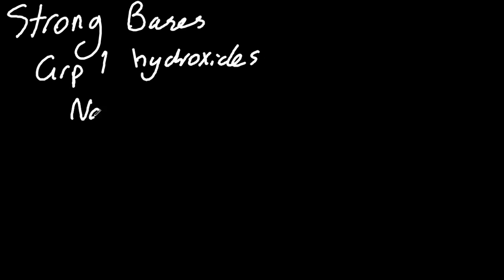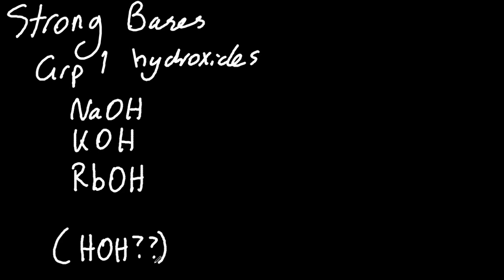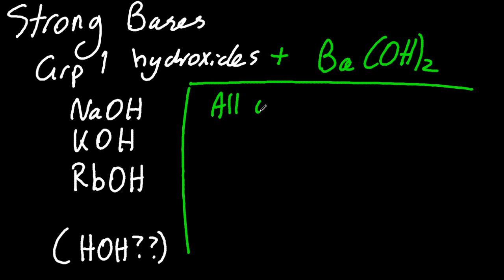Strong bases - those are group 1 hydroxides such as sodium hydroxide, potassium hydroxide, rubidium hydroxide (of course not hydrogen hydroxide), and barium hydroxide, that's group 2. They're all fully dissociated in water.